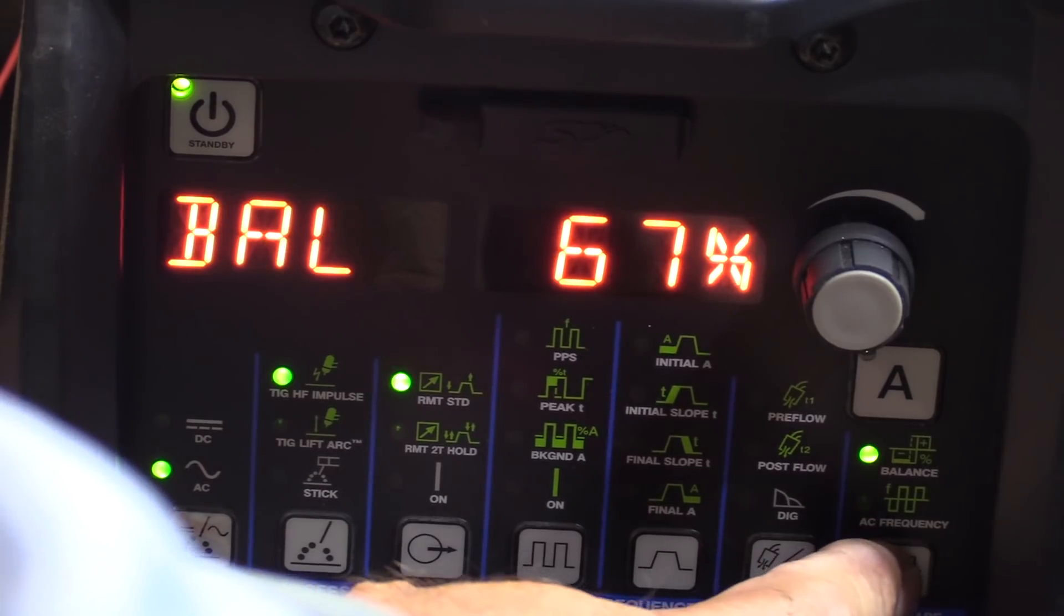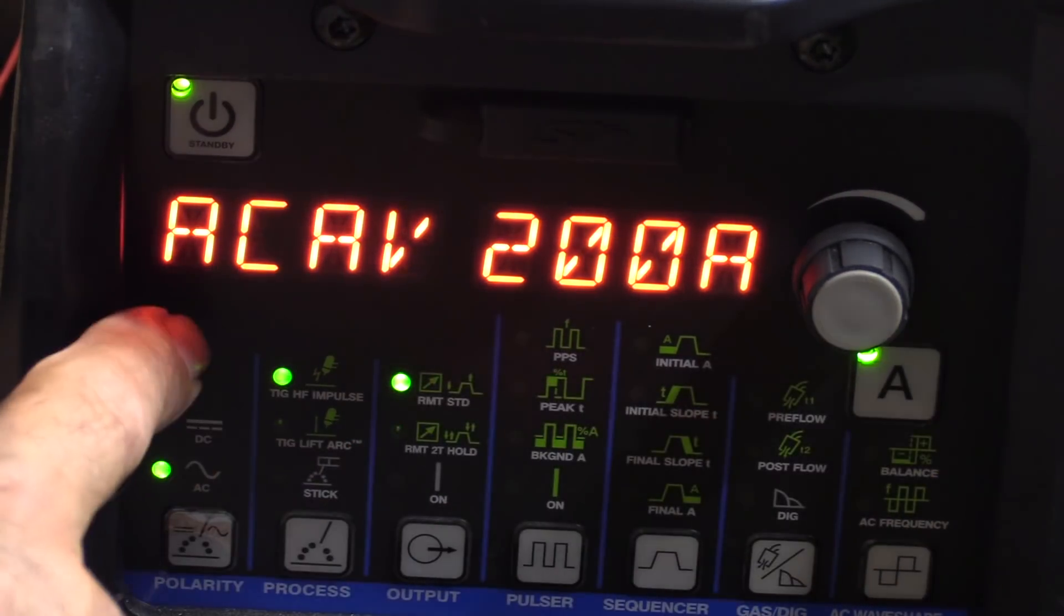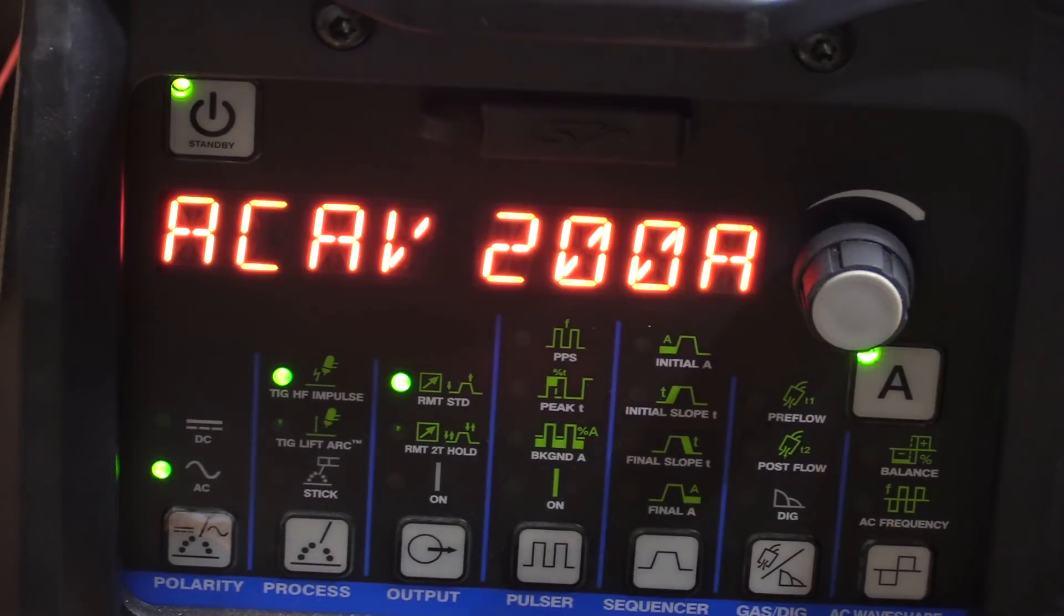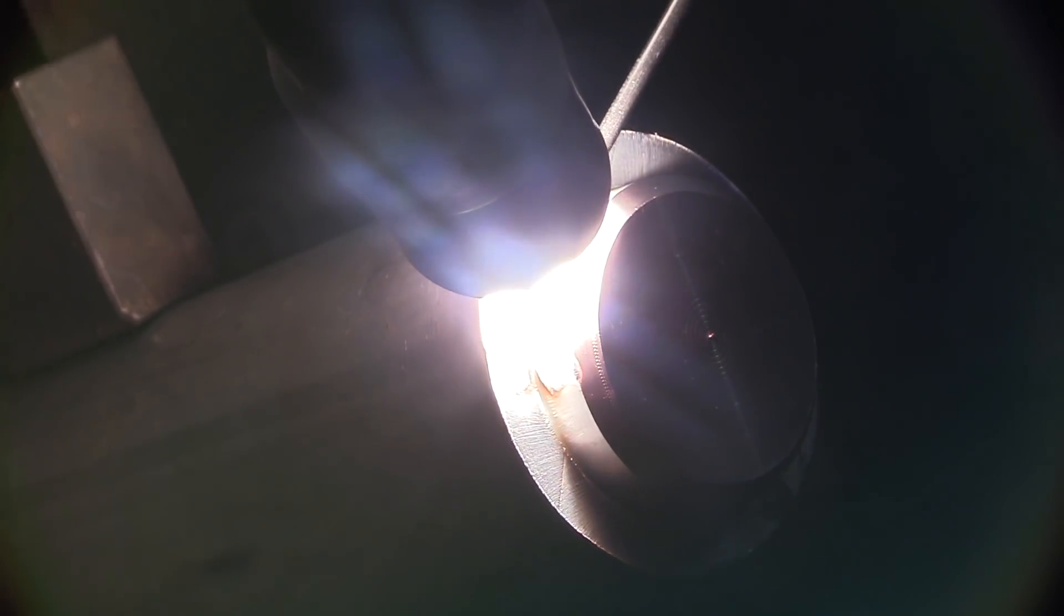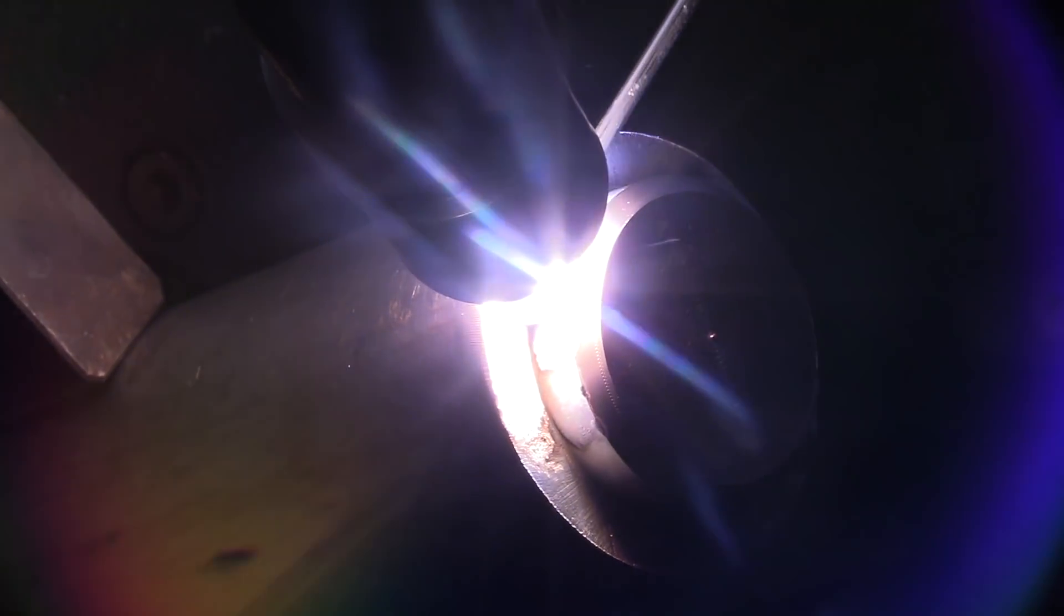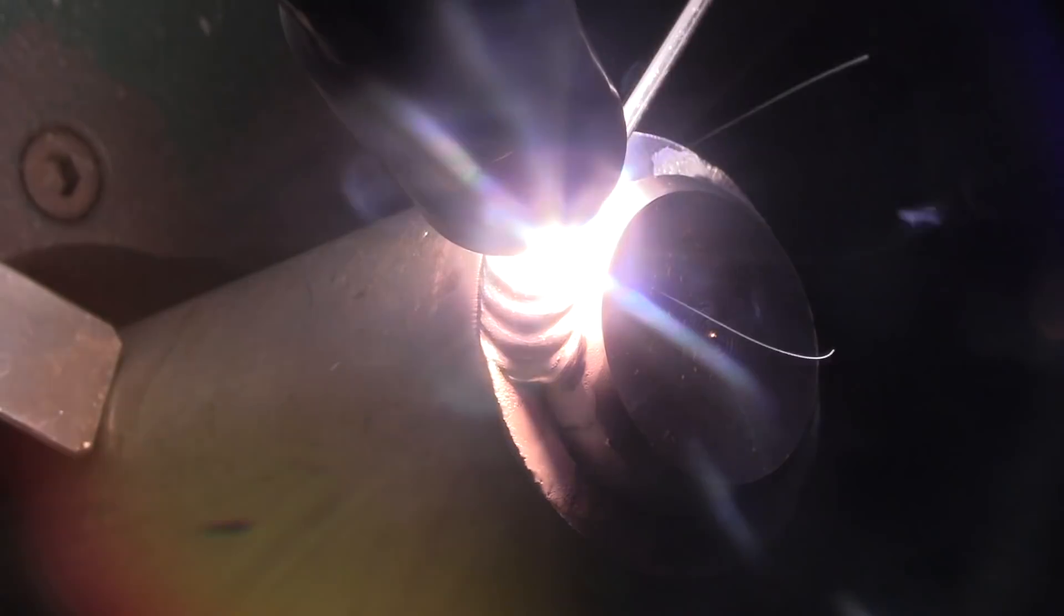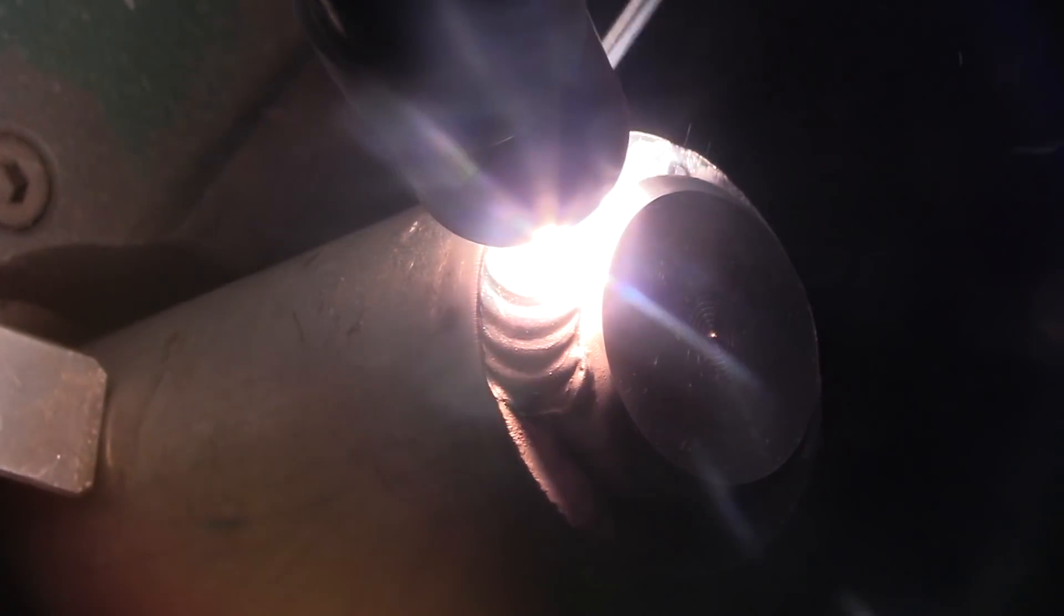My settings: I went low frequency, 60 Hertz, 67% on the balance. I set the machine at 200 amps. I rarely needed all 200—I did at first, punched it, and started backing off once the piece started getting some heat in it. I'm using a 3/32" 2% lanthanated electrode here with a 3/32" filler rod.